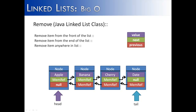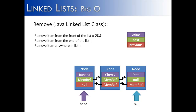The last operation we're going to look at is how to remove a node from a list. Just like before, we'll look at the first item, the last item, and then removing any item from the list. Removing the front item, or the head, has a Big O of 1, because no matter the list, it's always going to be the first item and takes constant time. All that happens is the head node reference is updated to the second node, thereby removing the first. Removing an item from the end also has a Big O of 1 — constant time — because the operation takes the same amount of time no matter what the list is.